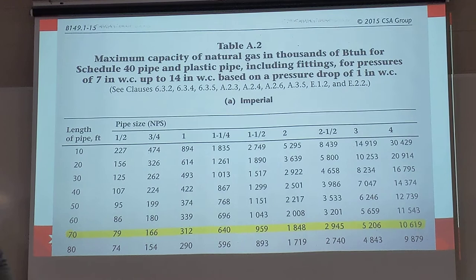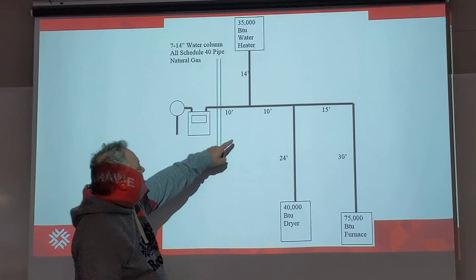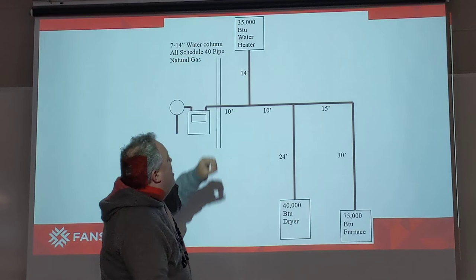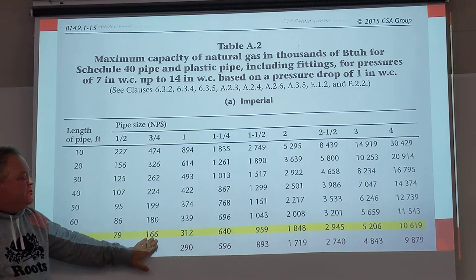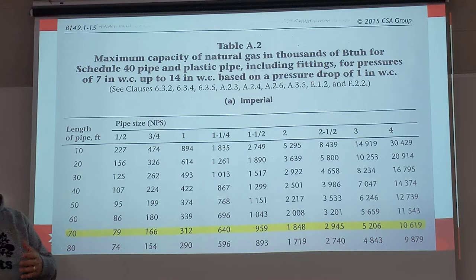The final piece we're going to size is the 10-footer that serves fuel for all of the appliances. We're going to add all the BTUs together — 150,000 BTUs total. At the 70-foot code zone, three-quarter inch will do just fine at 166,000 BTUs. So three-quarter inch is what we would use from the meter coming in on that first pipe.